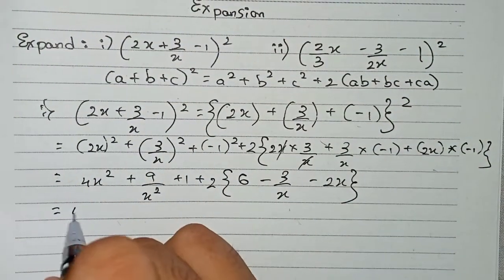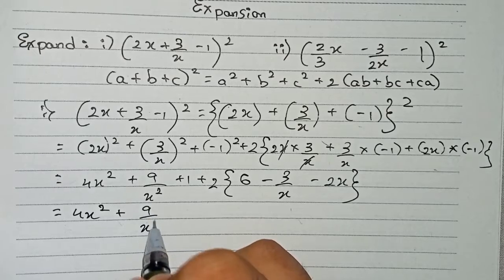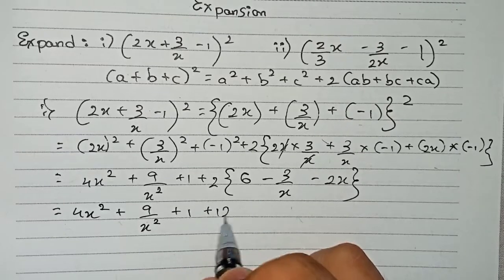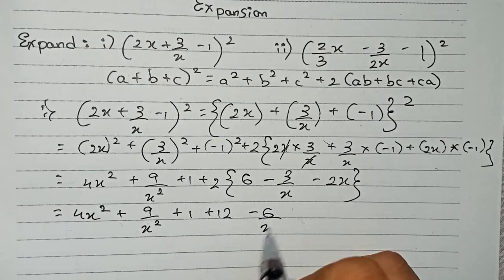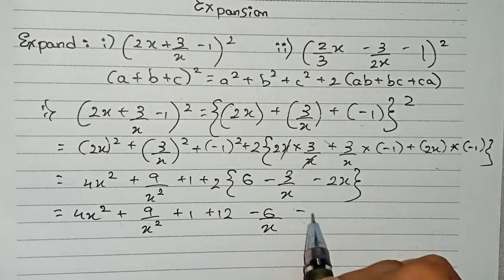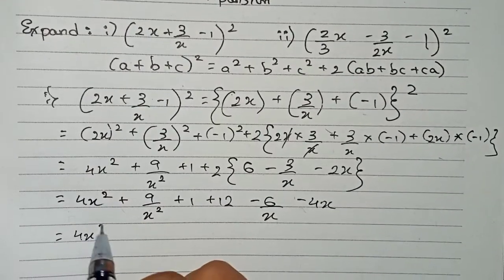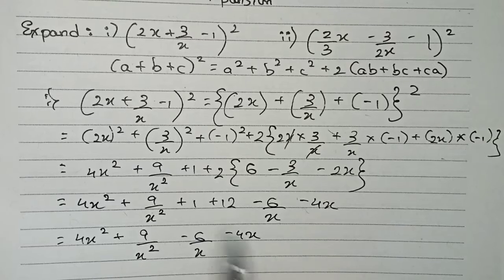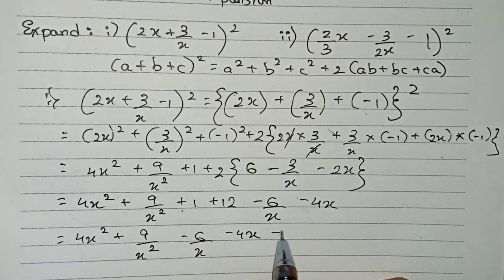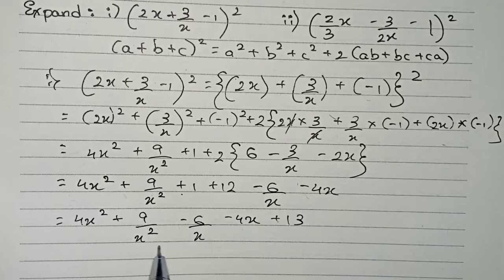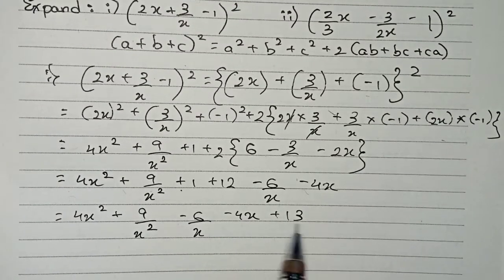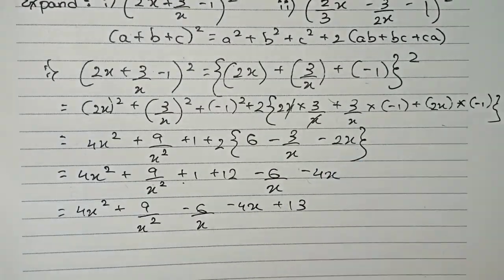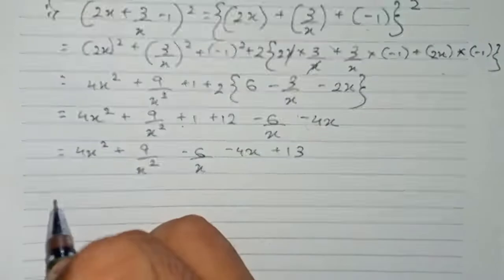Now multiplying the cross terms by 2: 2 × 6 = 12, giving +12; minus 2 × 3/x = -6/x; and minus 2 × 2x = -4x. So the final expanded form is 4x² + 9/x² - 6/x - 4x + 13, which is the answer for (2x + 3/x - 1)².